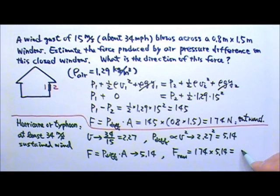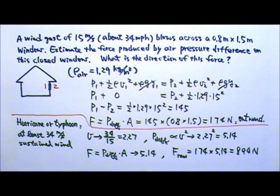That's about the weight of a 89.4 kilogram object. So when there's a hurricane or a typhoon coming, people would board up their windows because there will be large forces acting on their windows due to pressure difference created by the wind.